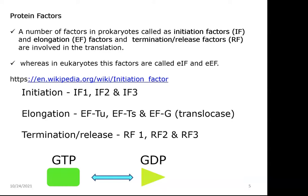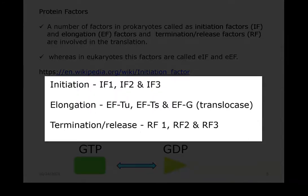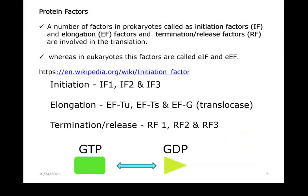Further details on protein factors can be found by referring to the Wikipedia webpage. The initiation factors in prokaryotes include IF1, IF2, and IF3, while elongation factors include EF-Tu, EF-Ts, and EF-G, also referred to as translocase. The termination or release factors include RF1, RF2, and RF3. All these protein factors are actively involved in translation using energy obtained from GTP, which is converted into GDP and back to GTP during the process.